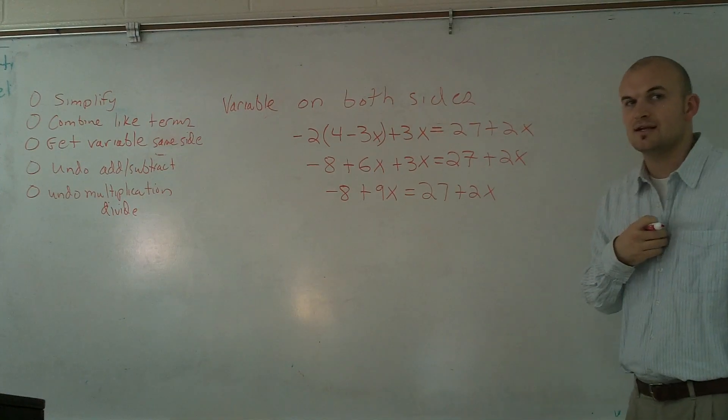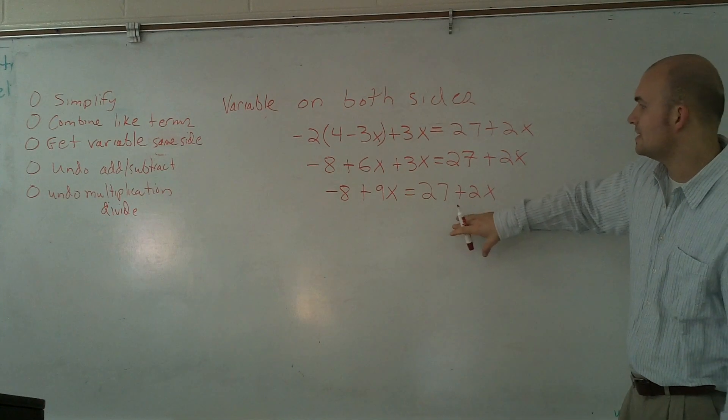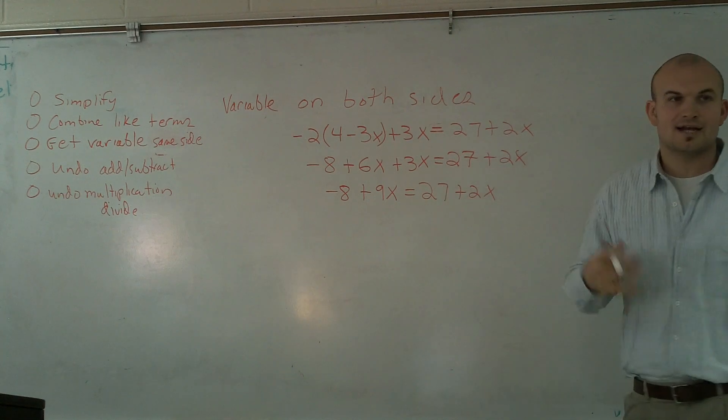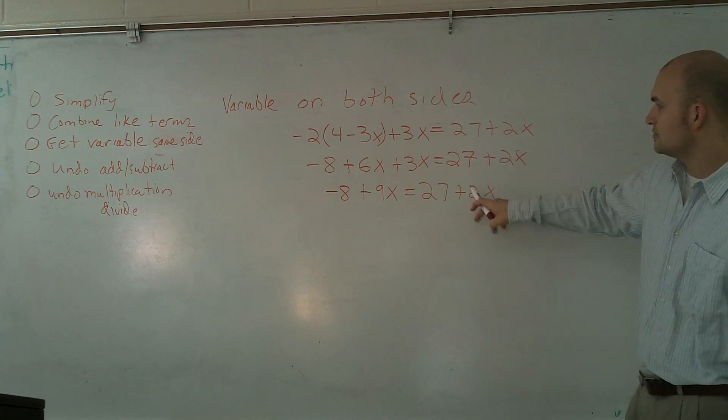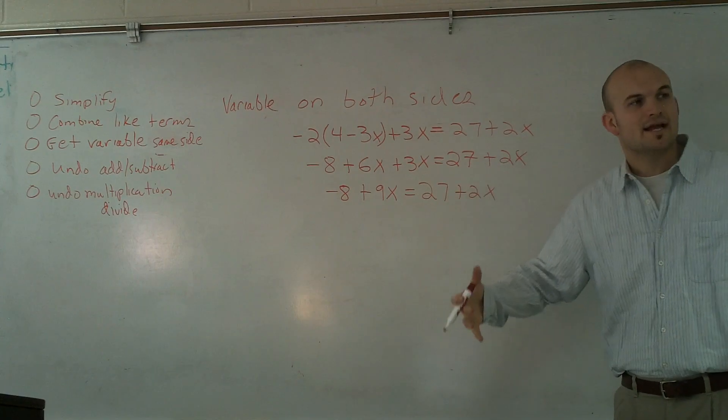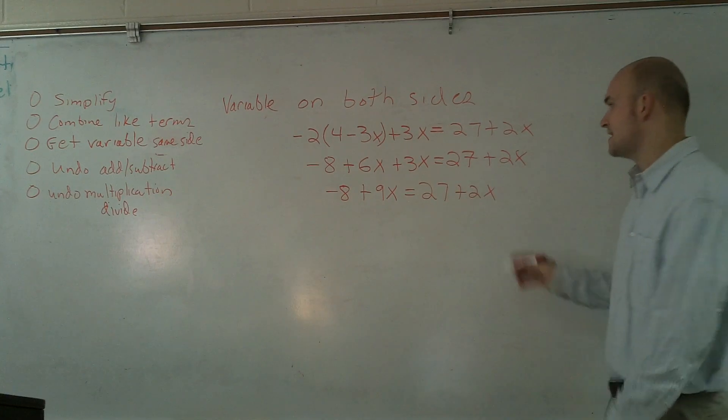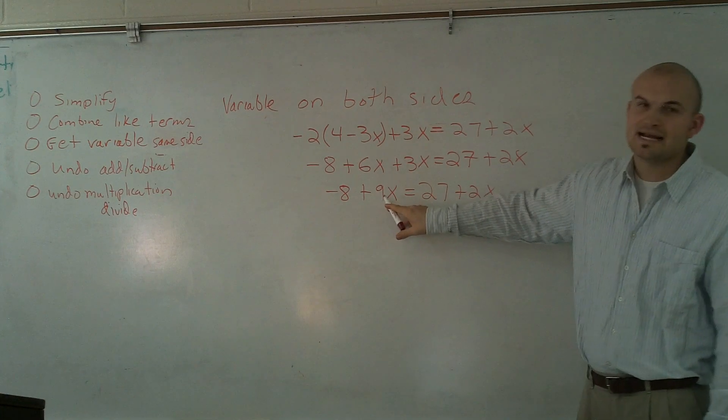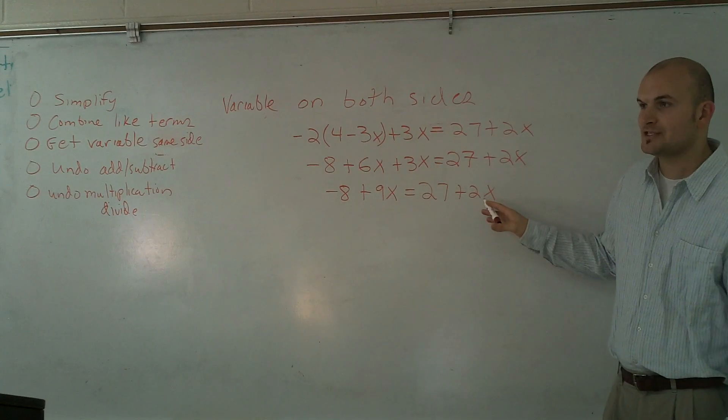From my experience, the easiest that I've found is to put your variable on the side where you're not going to get a negative number. I usually like to subtract my smaller numbers so I'm not dealing with negative numbers, because that's where a lot of students make mistakes. I'm going to keep my 9x here, and I'm going to get rid of my 2x.